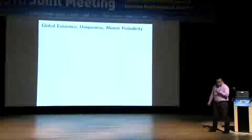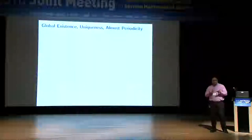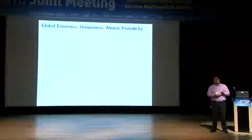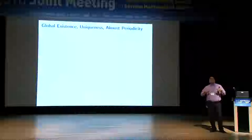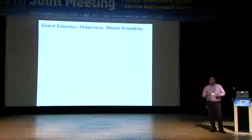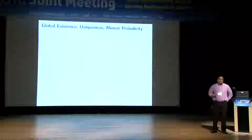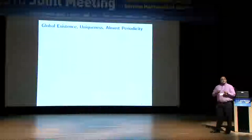The Deift conjecture addresses the KDV equation with almost periodic initial data, claiming global existence and almost periodicity in space and time. For the rest of the talk, I want to explain a perspective on this problem. This perspective leads to results — I will state results, sweep some assumptions under the rug, but explain what those assumptions are for, and primarily focus on the main players and connections between them.